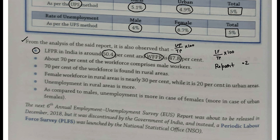About 70% jo workforce hai uske andar hamein mardon ki sankhya zyada dekhegi — male workers. 70% jo workforce hai, woh humein overall, as compared to gaon aur shahron mein, gaon mein zyada dekhenge. Jo female workforce hai, gaon ke andar — nearly 30%, shahron mein it is nearly 20%.